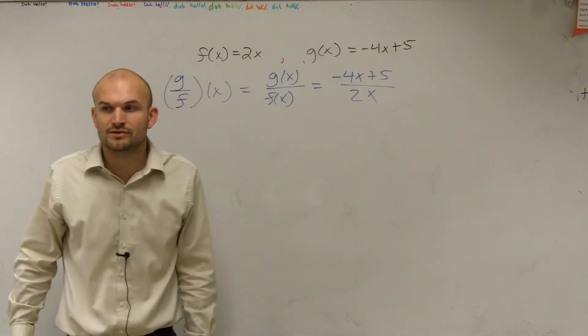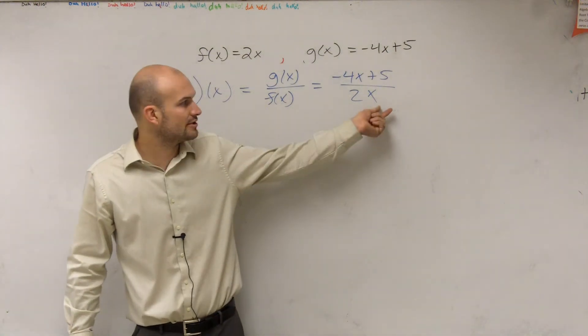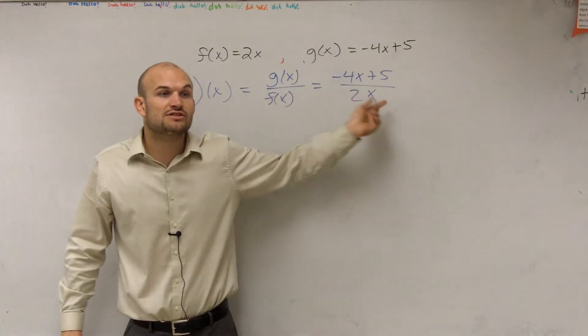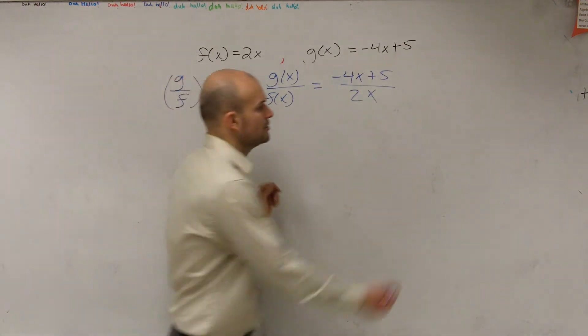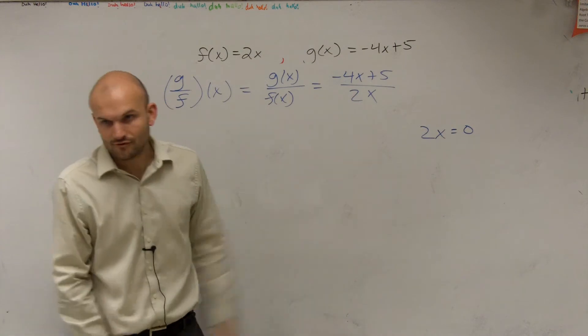So let's look at our constraints that we have to imply. We know that our denominator can be any number except for 0. So we need to figure out what values of x are going to make this 0. The only way to do that is to set your denominator equal to 0 and then solve for x.